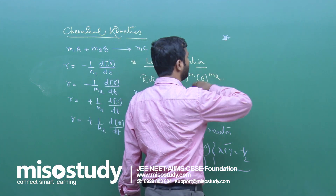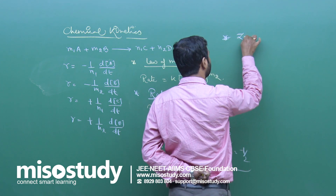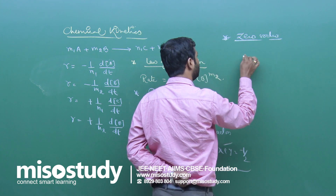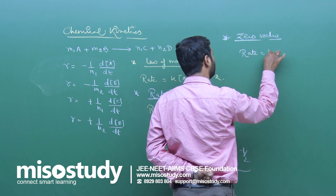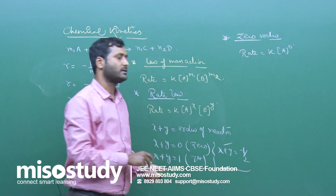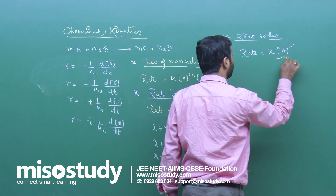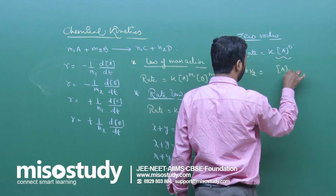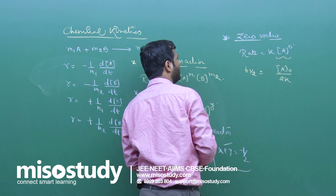For a zero order reaction, the rate expression is: rate = k[A]^0, meaning the rate is independent of the concentration of the reactant. The half-life for zero order is t½ = a₀ / 2k.